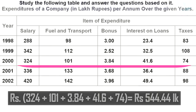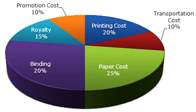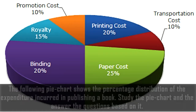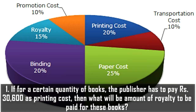Next, we'll look at pie charts. The following pie chart shows the percentage distribution of expenditure incurred in publishing a book. It shows various expenditures as percentages — royalty, binding, paper cost, transportation cost, printing cost, and promotion costs. If for a certain quantity of books the publisher has to pay rupees 30,600 as printing cost, what will be the amount of royalty to be paid?